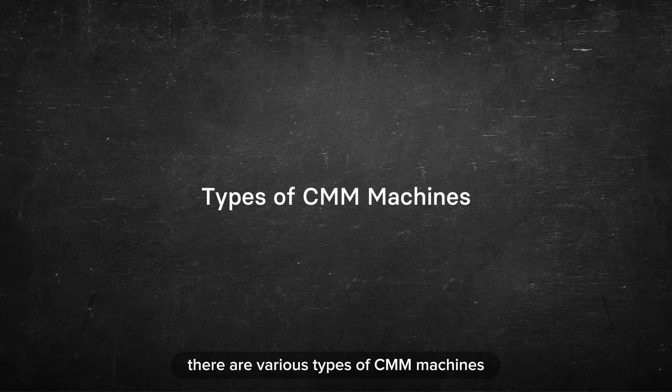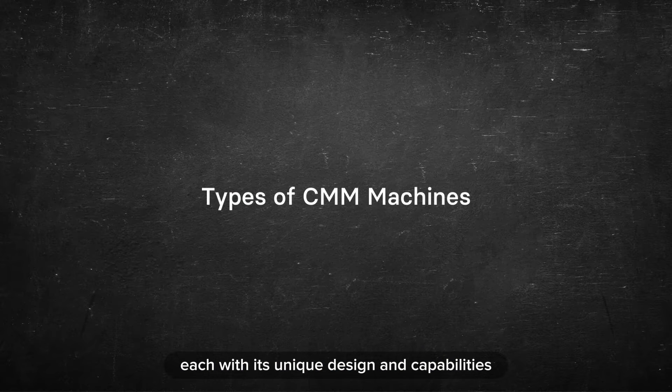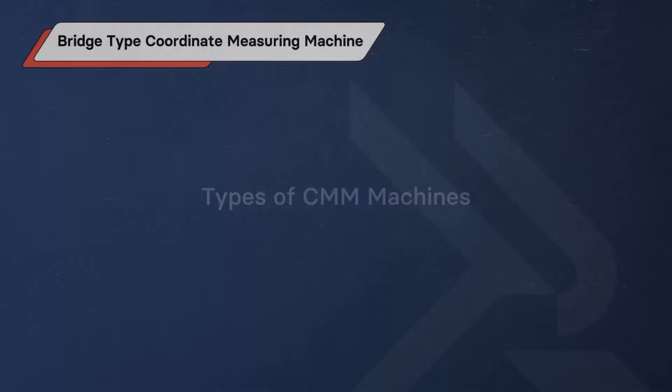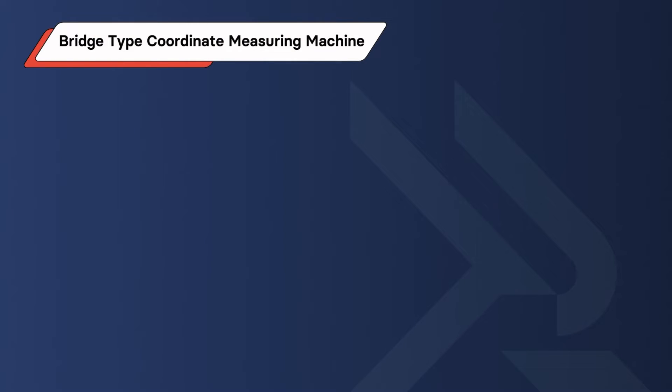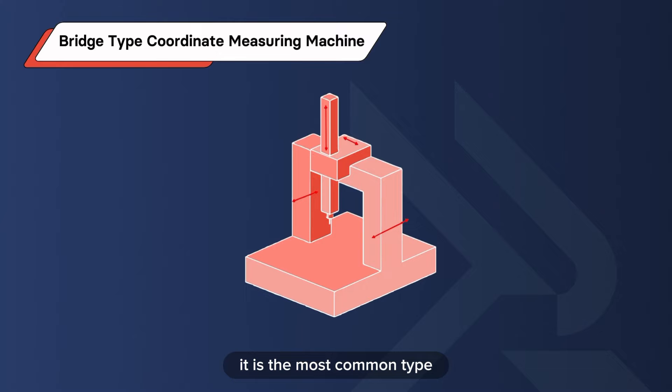There are various types of CMM machines, each with its unique design and capabilities. Bridge Type Coordinate Measuring Machine is the most common type.